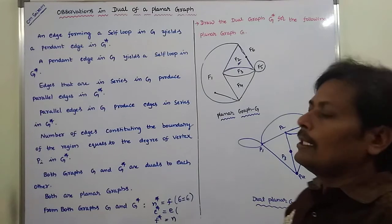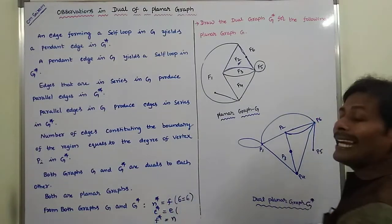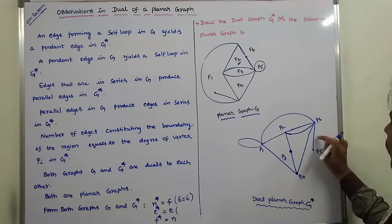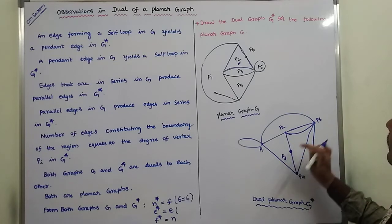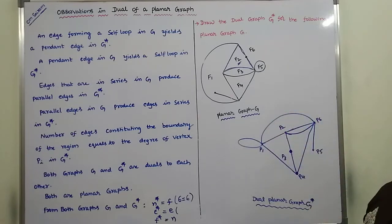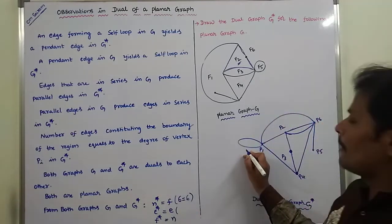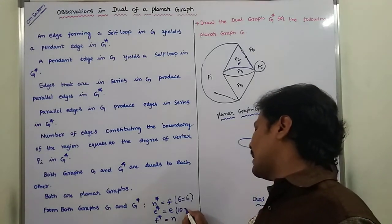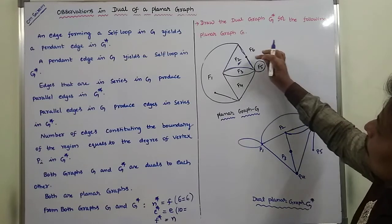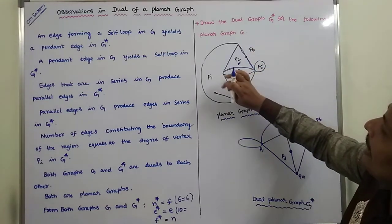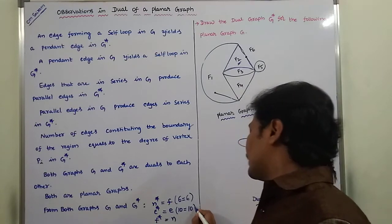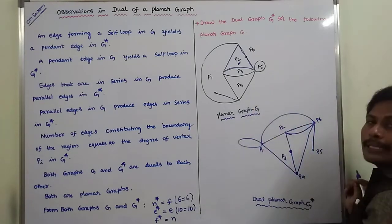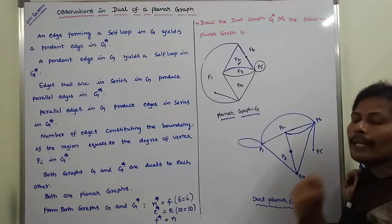Also, E star equals E. E star is the number of edges in the dual graph, which is 9 (or 10 if a self-loop is considered as 2 edges). The number of edges in G is also 10 when the self-loop is counted as 2 edges. So the number of edges in G star equals the number of edges in G.